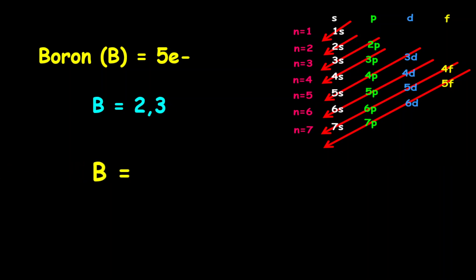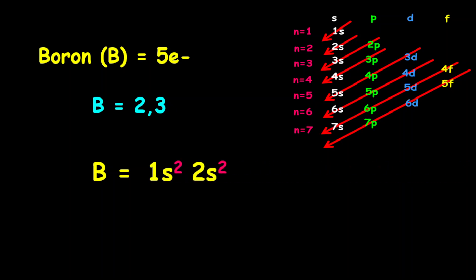For the orbital filling electron configuration, it is given as 1s2, followed by 2s2, then followed by 2p1.